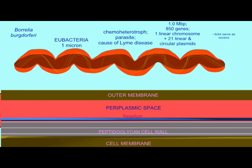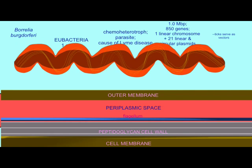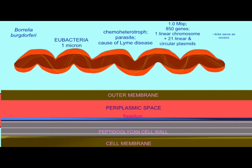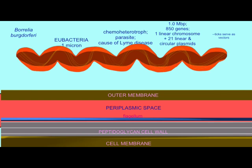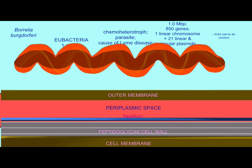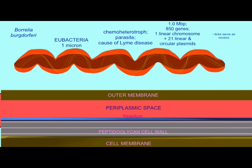Spirochetes possess a periplasmic space between the peptidoglycan of the cell wall and the outer membrane. It is in this space that a number of flagella wrap around the bacterium, changing its shape from a rod-shaped to that of a spirochete.